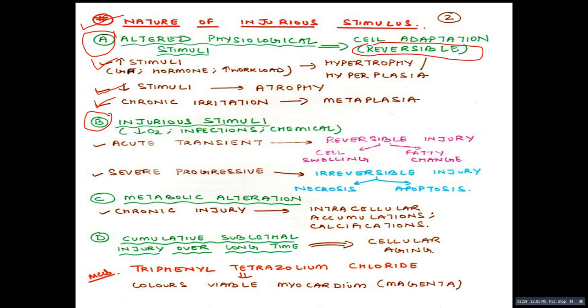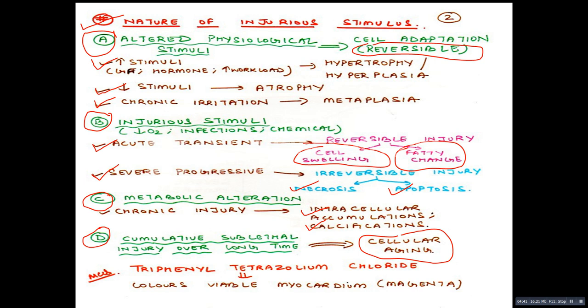If we give any kind of injury stimulus — for example, hypoxia, infections or chemicals — if they are acute and transient, it will lead to reversible cell injury in the form of cell swelling and fatty change. But if it is severe and progressive, it will lead to irreversible injury in the form of necrosis and apoptosis. Any kind of chronic injury can lead to intracellular accumulations and calcifications. Cumulative sublethal injury over a long period of time leads to a process called cellular aging.